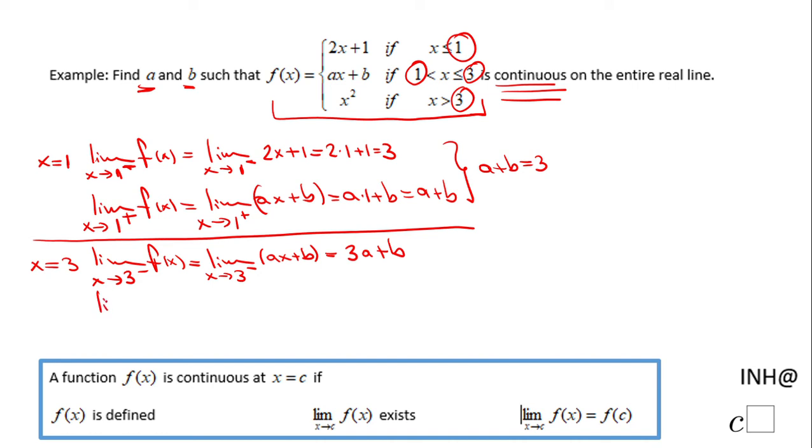When I go from the other side of 3, from the right side, I end up with the limit when x approaches 3 plus of x squared, the last piece of the piecewise function, and that becomes 9. These two need to be equal.